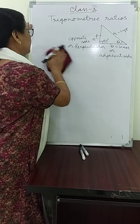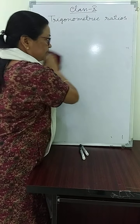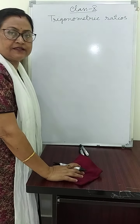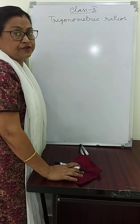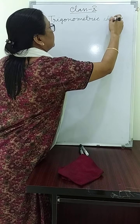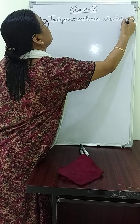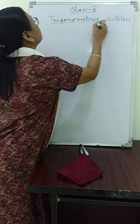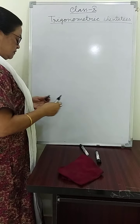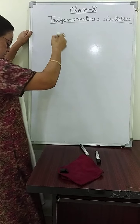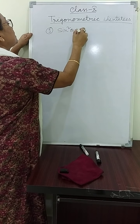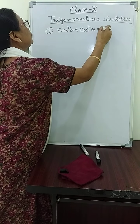So for example, let us say what are the trigonometric identities? Today we will discuss the trigonometric identities, and with the help of these trigonometric identities, we will prove some proofs. So trigonometric identities — number one: